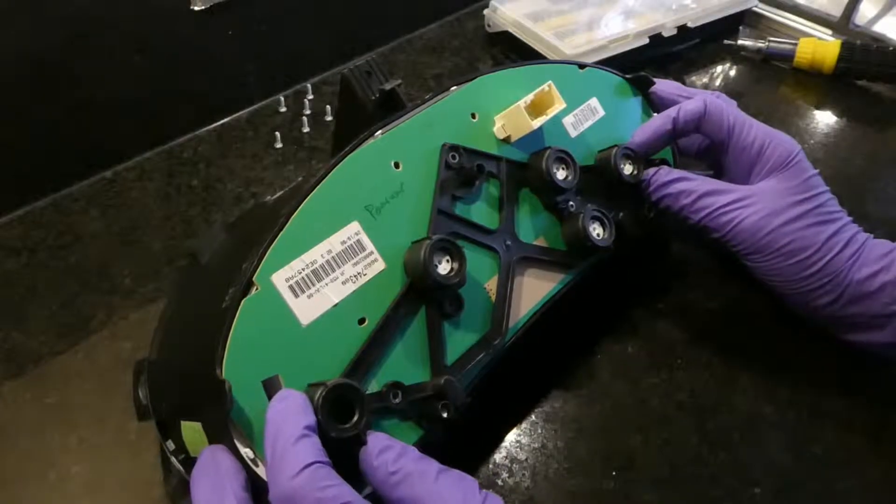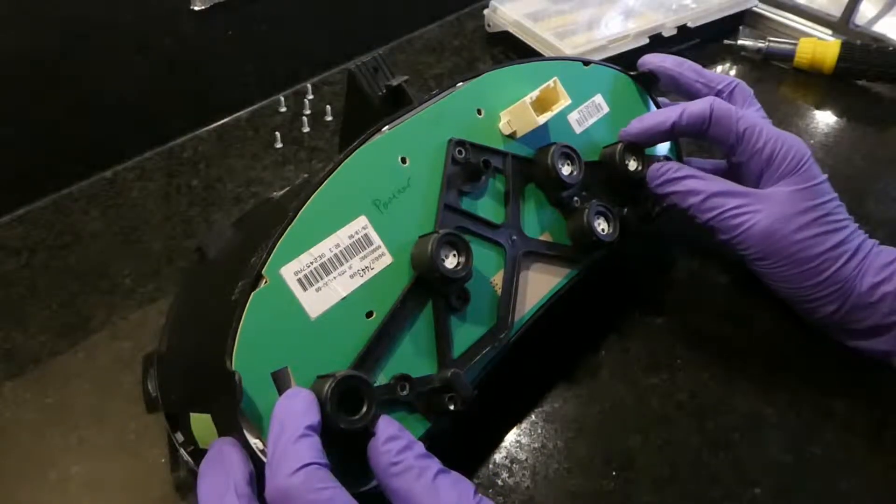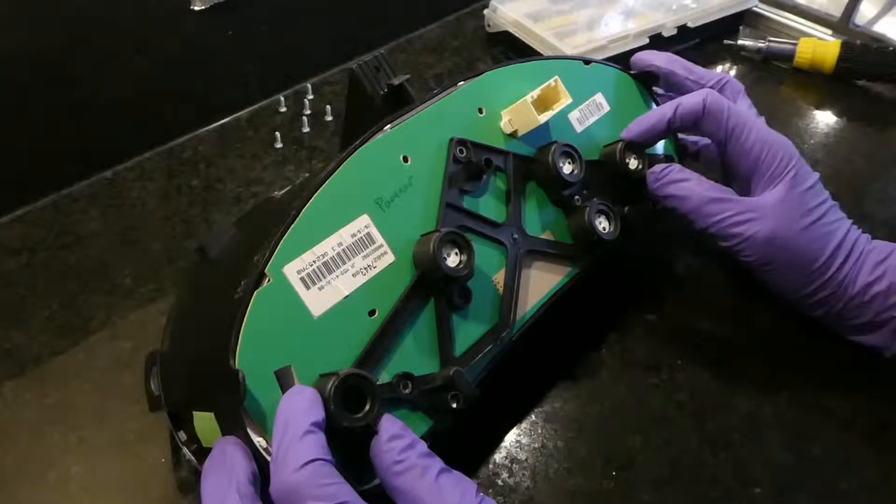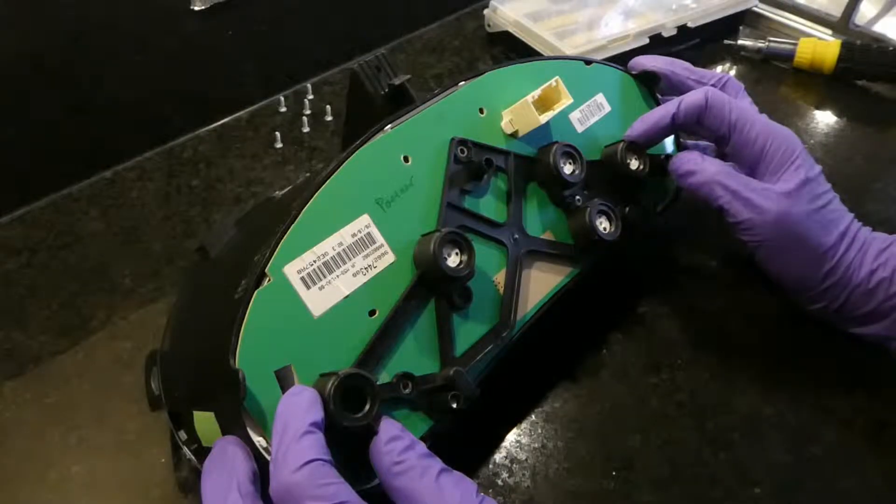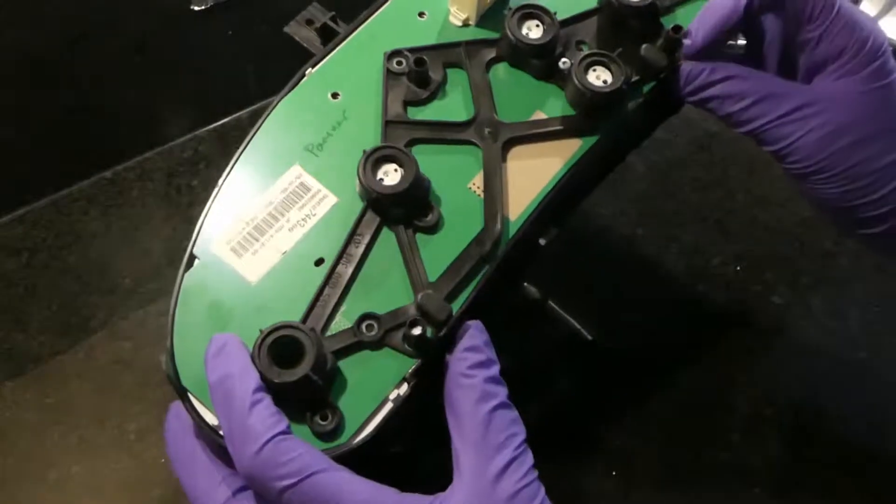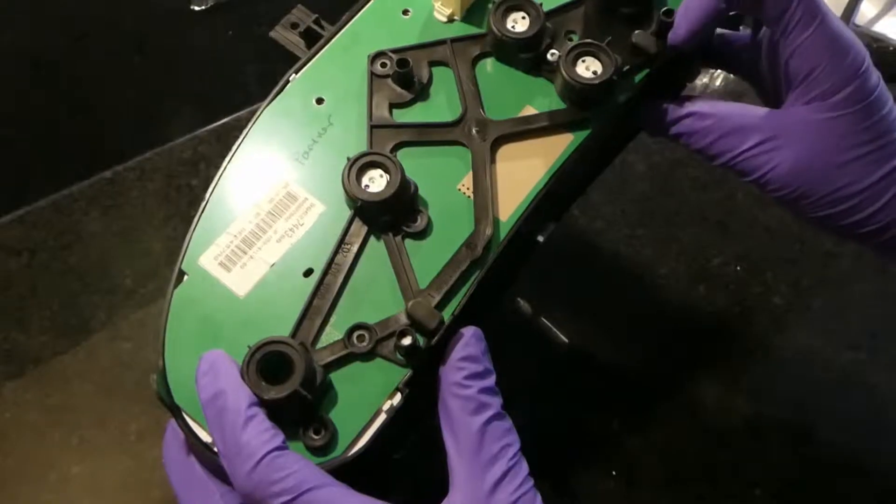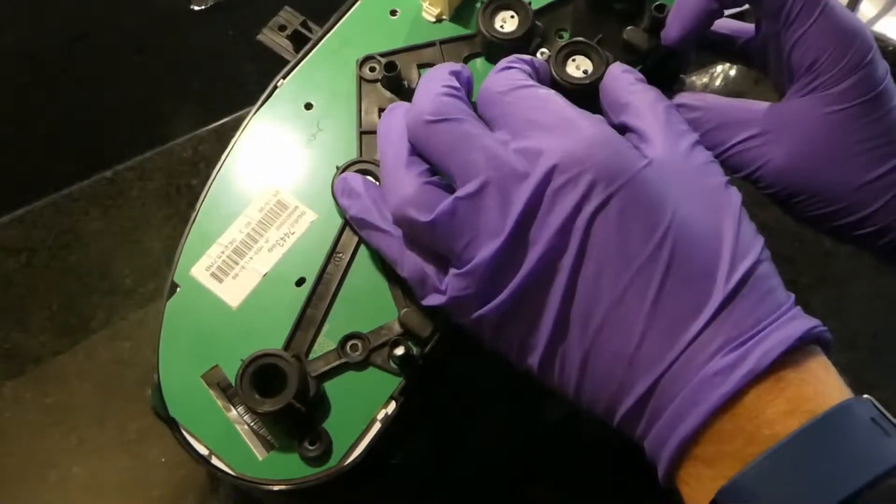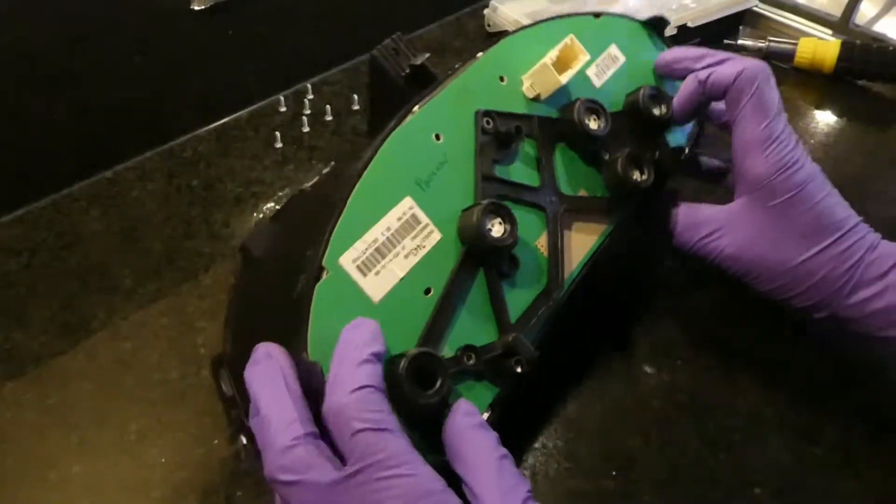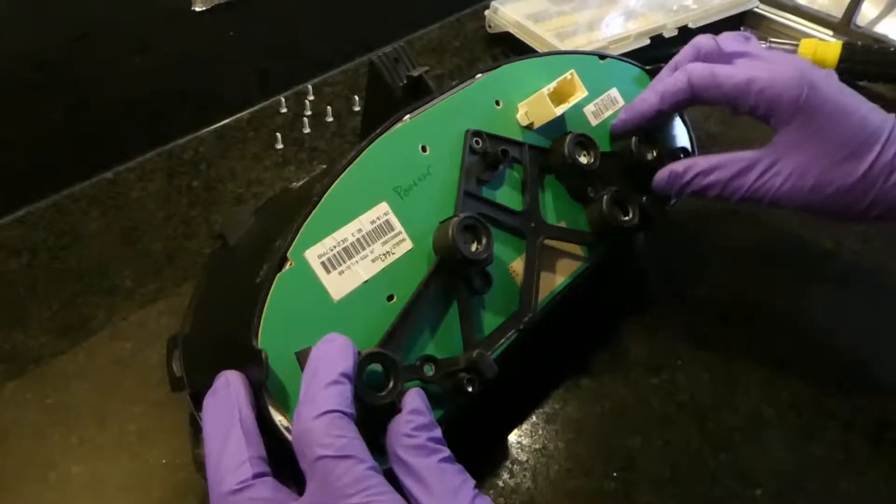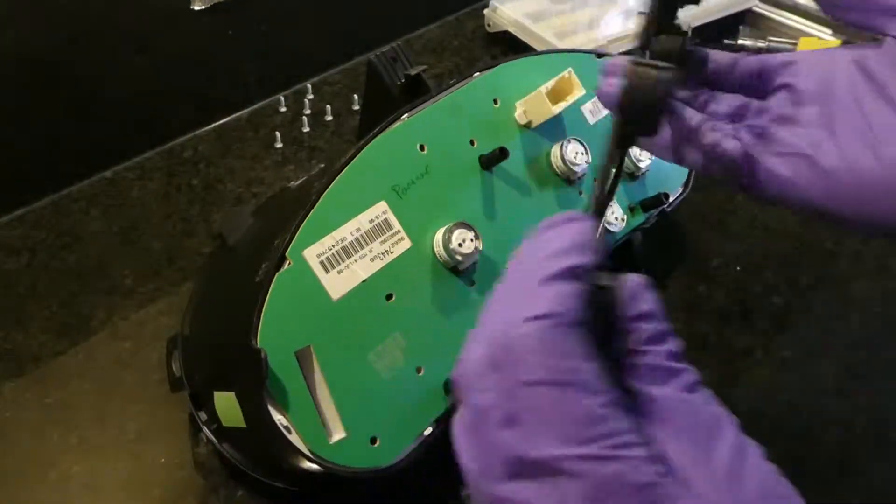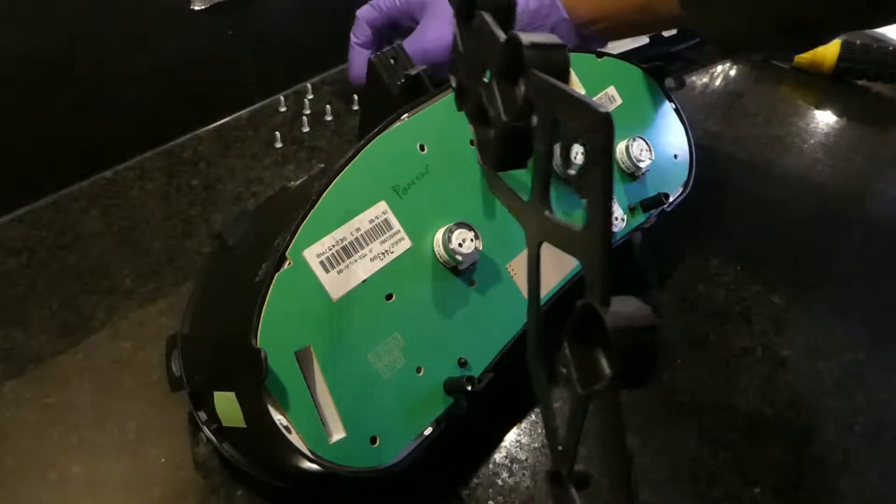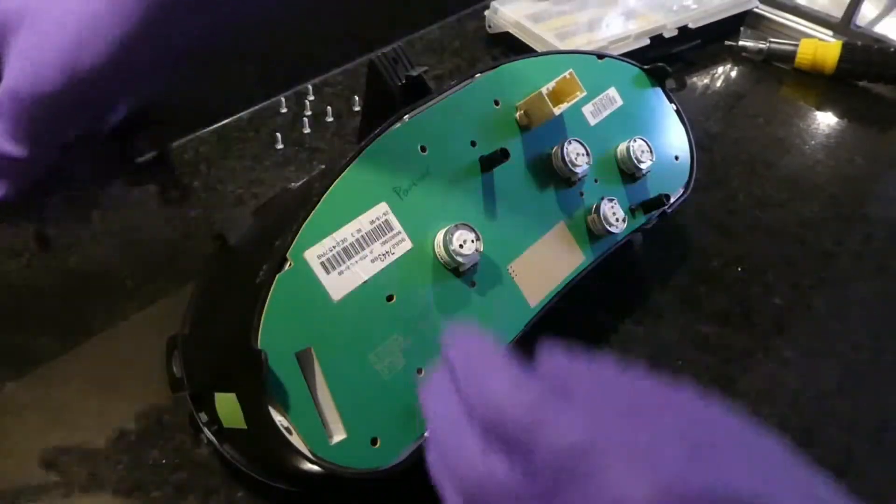In order to take this plastic cover that's on top of the speedometer and RPM motors, you basically lift with a finger on this step and this gets over. Lift on that side and this will slide over. Put this aside.